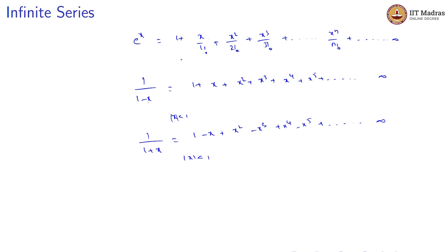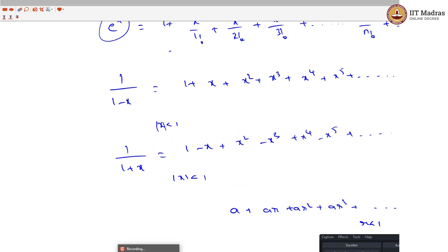So these are the four types of infinite series we have looked at: one is the geometric series a + ar + ar² + ... when r is less than 1; the second is the expansion of e^x as a sum of infinite terms; the third is the 1/(1 − x) expansion; and the last is the 1/(1 + x) expansion. These are the infinite series which will be useful for you to solve the problems. Thank you.